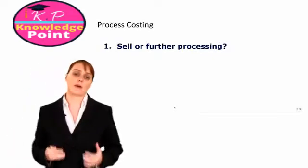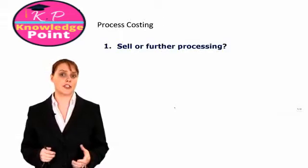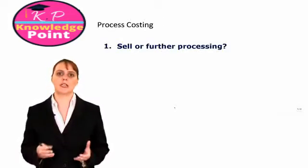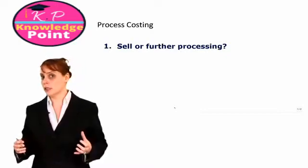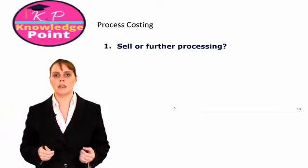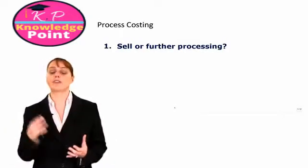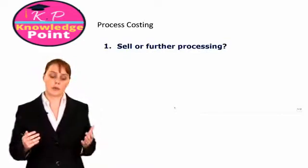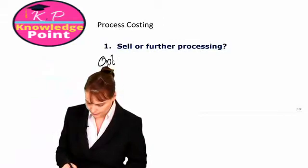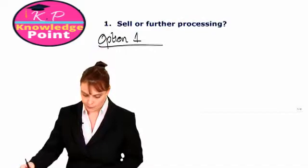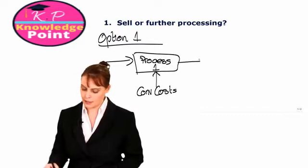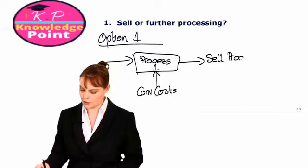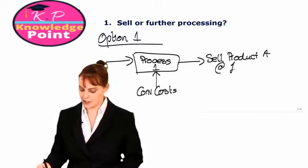The final thing we need to look at in our process costing section is to consider a situation where a company has a choice between either selling their product after a certain amount of processing, or continuing to further processing and perhaps selling it at a higher selling price. So option one would be to input our units into process one, incur our conversion costs, and after that sell our product at £10 per unit.